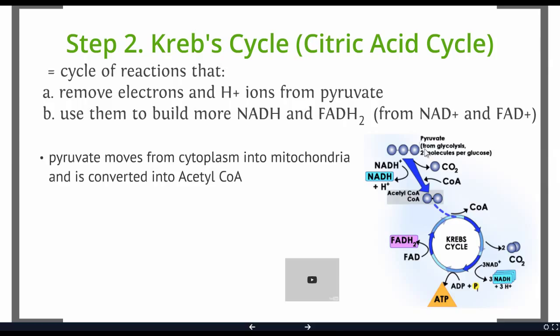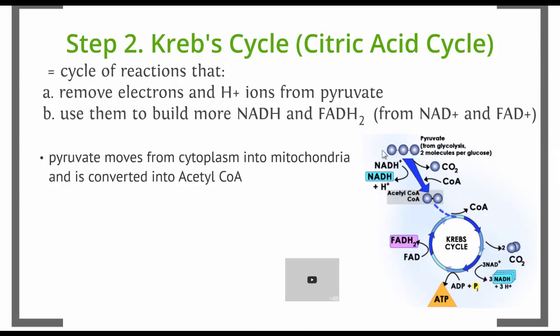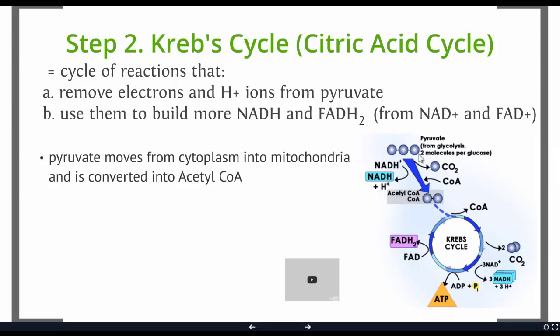So pyruvate is going to move from the cytoplasm into the mitochondria. Krebs cycle needs to happen in this particular organelle. It's going to be converted into something called acetyl-CoA. And this is a two carbon molecule that can then enter this Krebs cycle. Notice in the conversion, we create a little bit of NADH. We load up one taxi cab. And we also create a leftover carbon dioxide molecule.